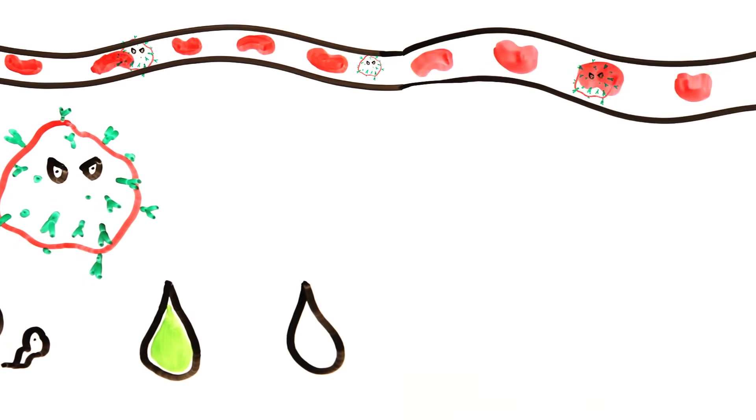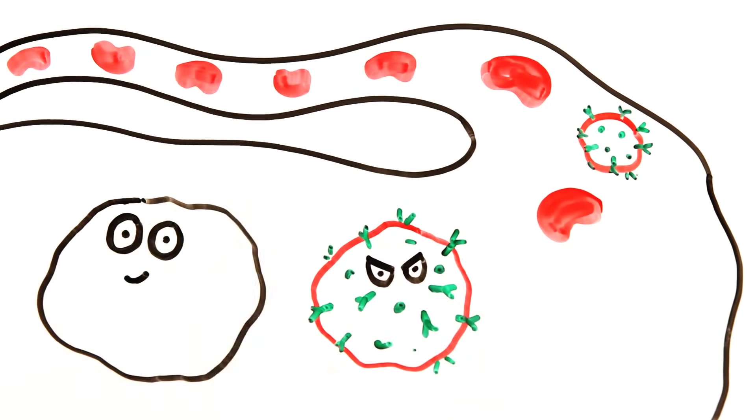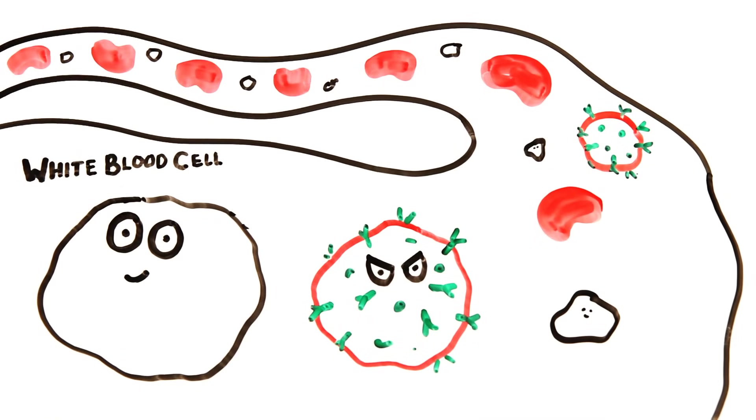Once inside the bloodstream, HIV targets a variety of cells, but most specifically the T helper cells, which are a type of white blood cell that play an essential role in our immune system and fighting infections.